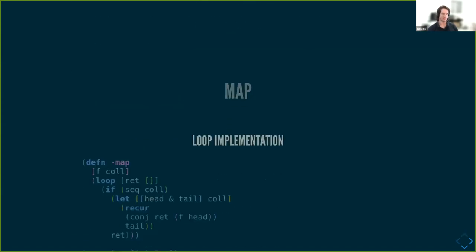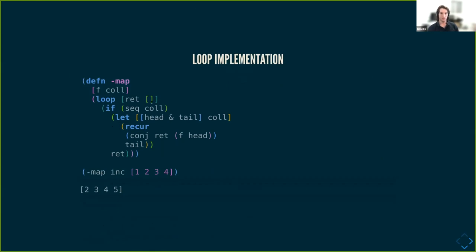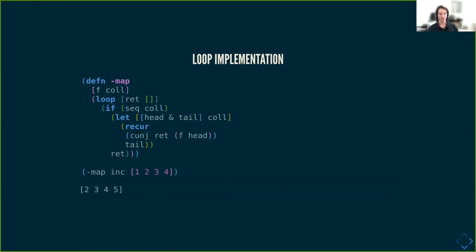Let's start with map, starting from a very straightforward implementation with a loop. I have some return accumulator which I'm going to build up, a function which I map over a collection. I check if the collection is empty. If it is not empty, I destructure the collection, and I conj into the accumulator the function applied to the head element of the collection, and recurse with the rest of the collection.